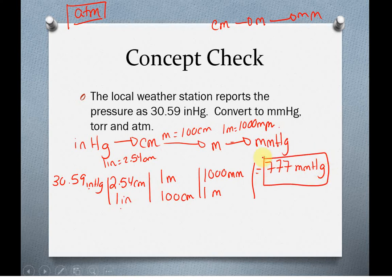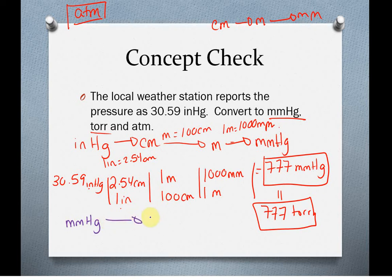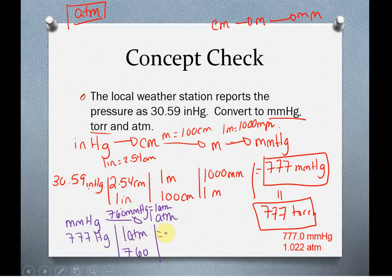So we have our millimeters mercury. We know that that is exactly the same as torr, which means we also have 777 torr. So that covers these two units. Now, if we want to convert to atmospheres, we have millimeters mercury. We're going to memorize that every time we have 760 millimeters mercury, we get 1 atm. So here we have 777 millimeters mercury. Dividing that by 760 is going to give us 1 atmosphere. It should give us something like 1.02 atmospheres. Basically close to 1, which is a realistic expectation since it's from the weather station.